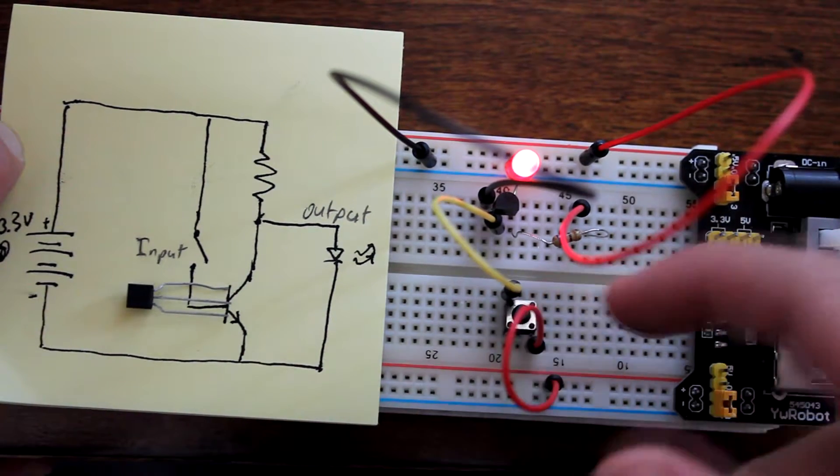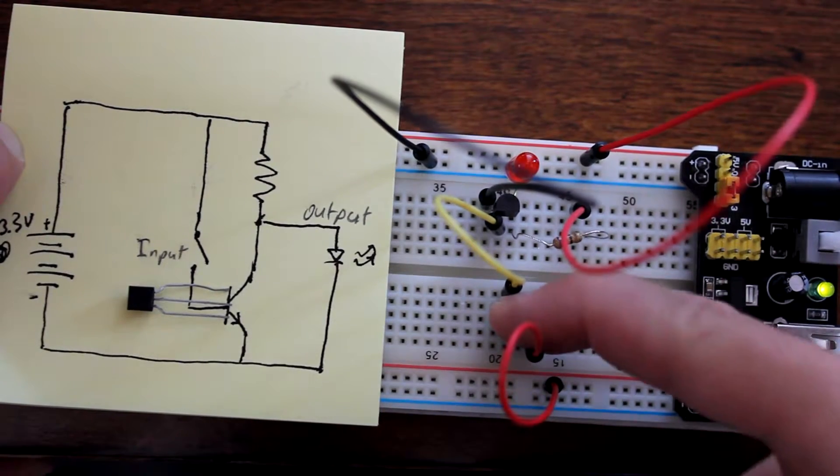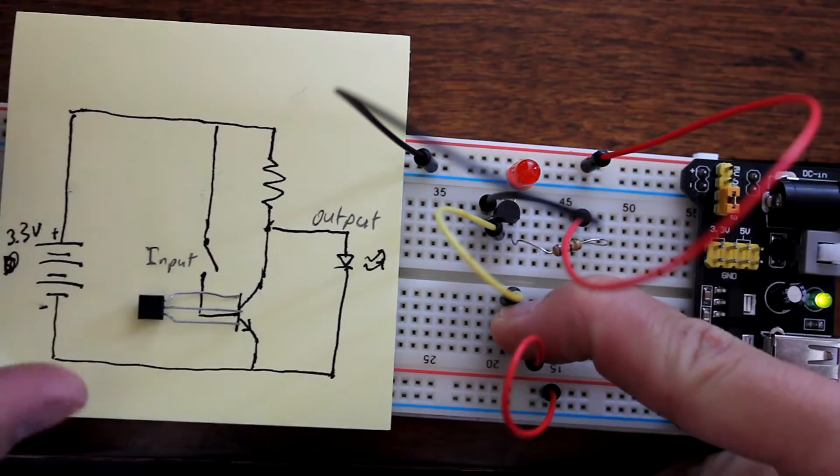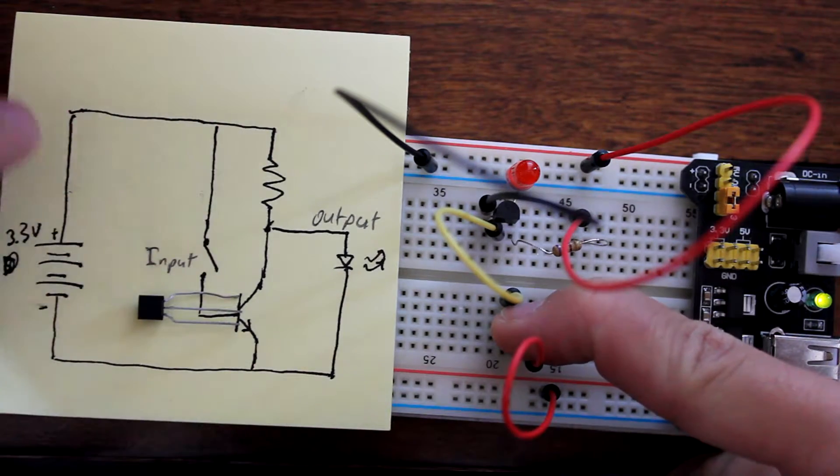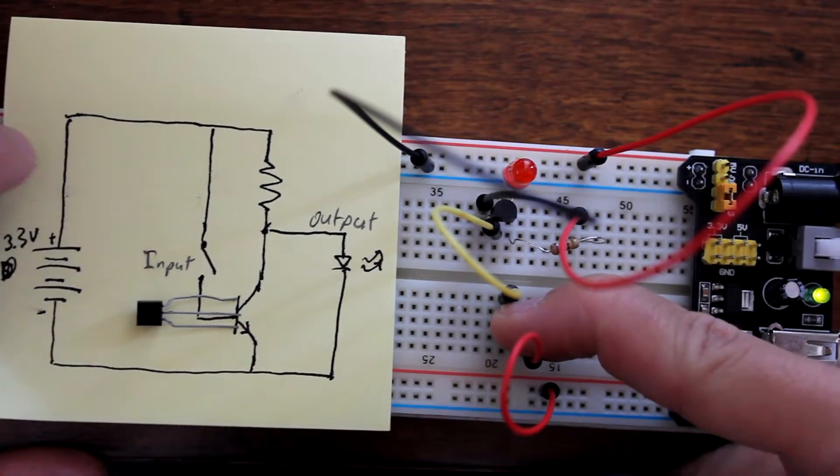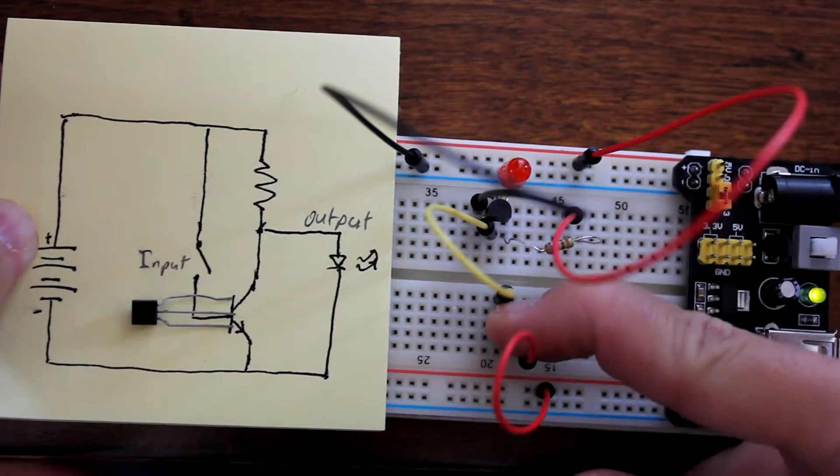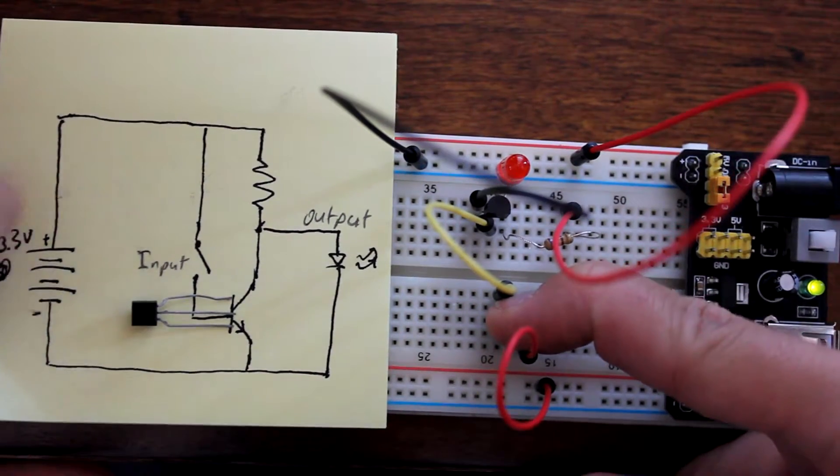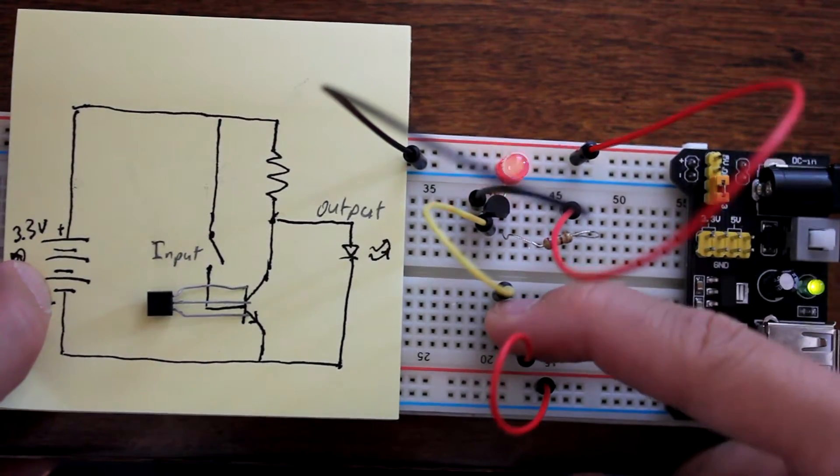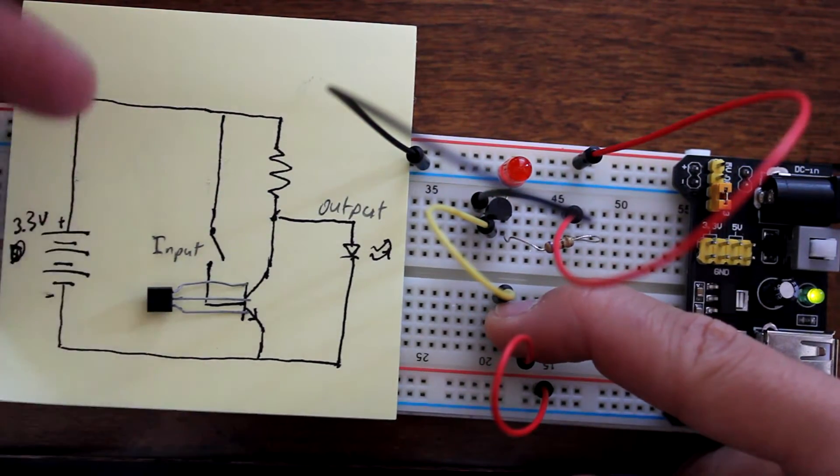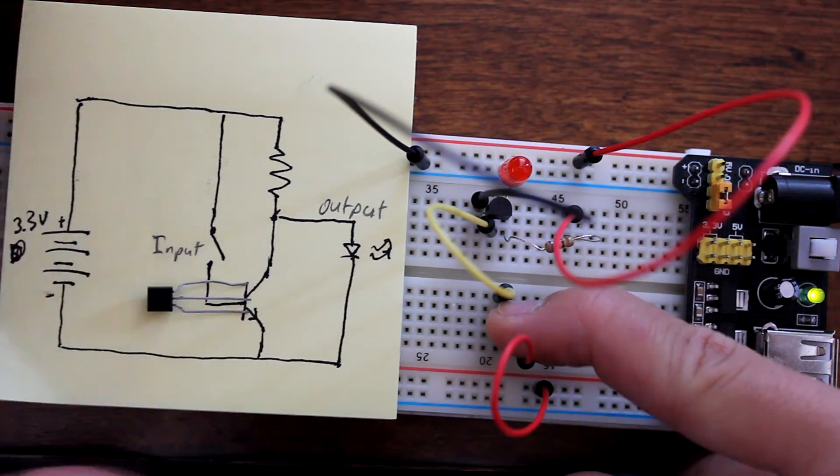However, when I press this switch, a positive voltage is provided to the gate of the transistor, and that allows current to flow through the transistor, which is the semicircular object on the redboard, bypassing the LED and going back to the ground. So a positive input, or a one, through the transistor causes a zero through the LED.